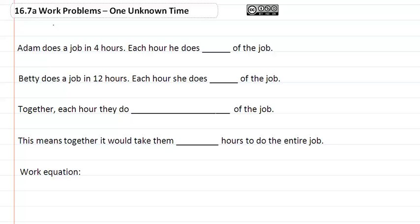16.7a Work Problems One Unknown Time. Adam does a job in four hours, that means each hour he does one fourth of the job.